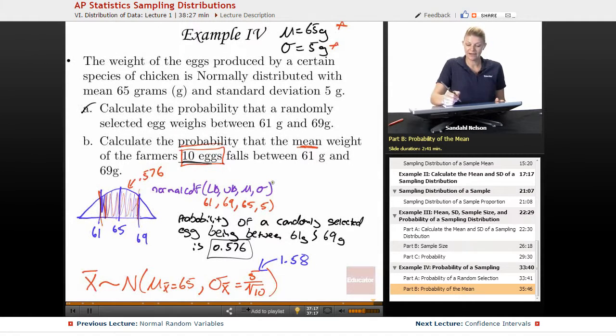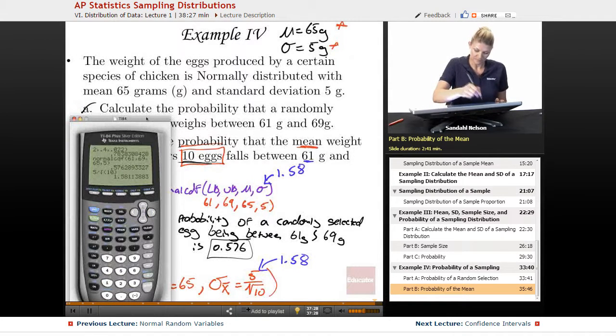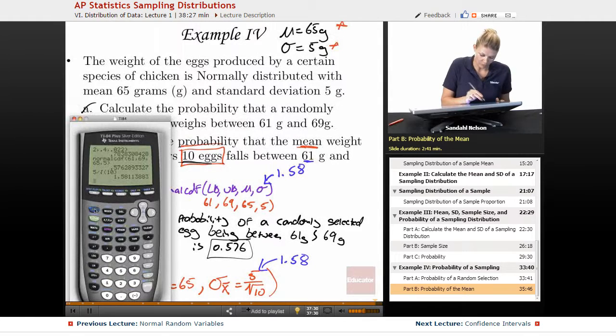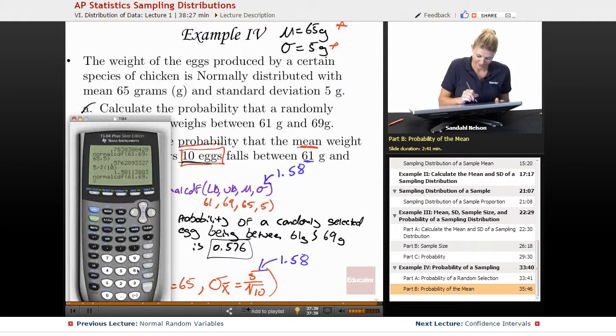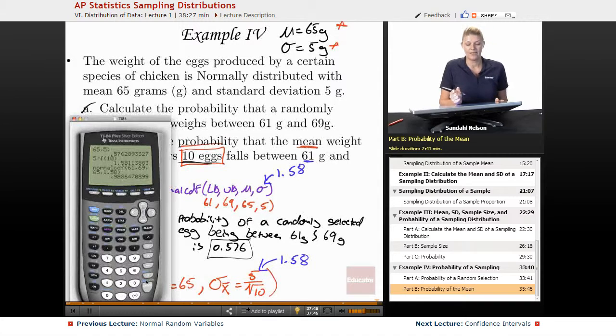And we're just going to recalculate this, but now, right, it's still between 61 and 69 grams, but now our standard deviation has changed, and now it's 1.58. So it's going to be normal CDF, 61, because that's my lower bound, comma 69, that's my upper bound, comma 65, that's my mean, but now my standard deviation is 1.58. So now the area is .989.